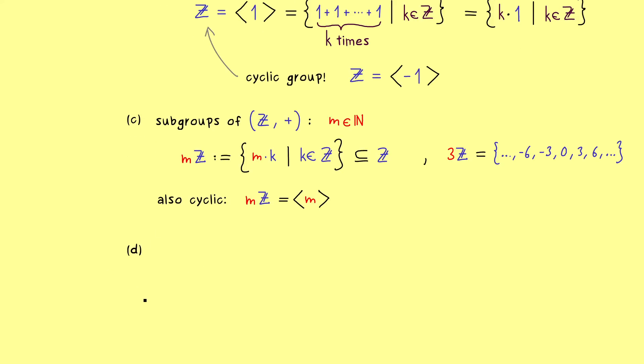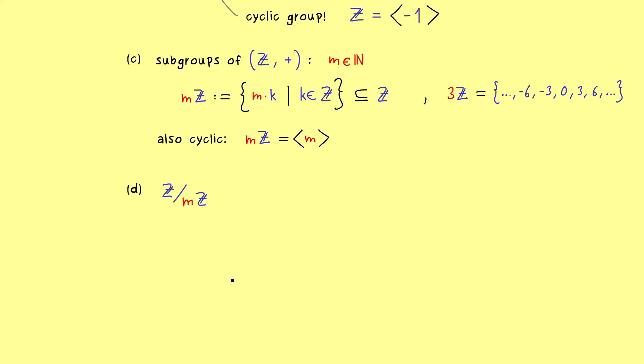Therefore, with the next example, let's go to finite abelian groups. And there you already know some very important ones, namely the integers modulo m. For every natural number m, we already know that this is a well-defined finite abelian group. And now the question is, is this also a cyclic group? And maybe as a quick reminder, let's write down the elements for m is equal to 3.